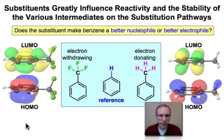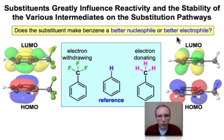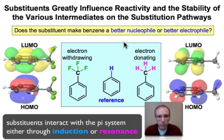The substituents on a benzene ring can influence the electronics of the π system to make it a better nucleophile or a better electrophile, and stabilize the various intermediates encountered in the reaction pathway shown in the previous webcast. There are two ways that these substituents can interact with the π system: one is by inductive effects, and the other is through resonance interactions that involve the π system entirely.